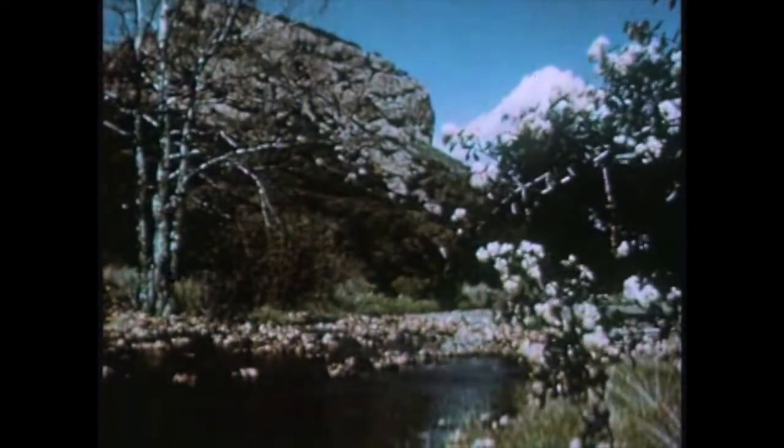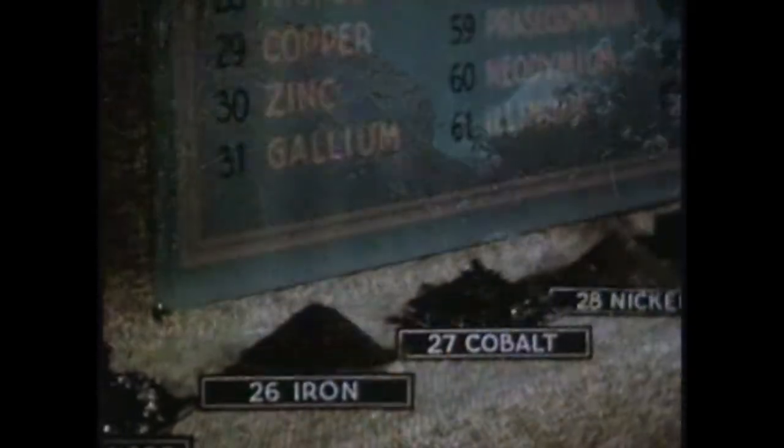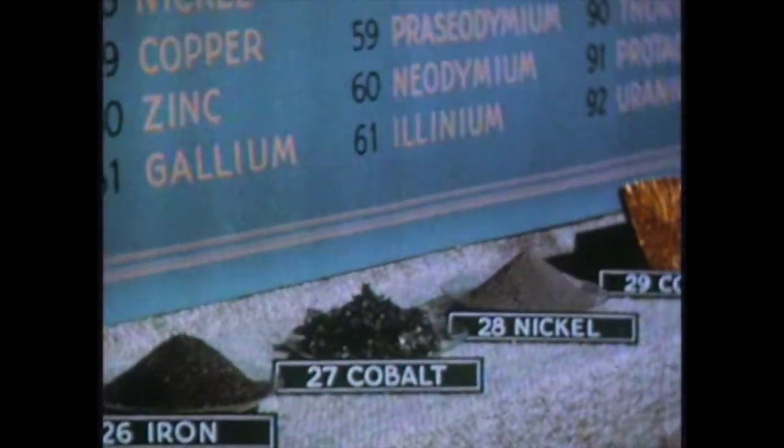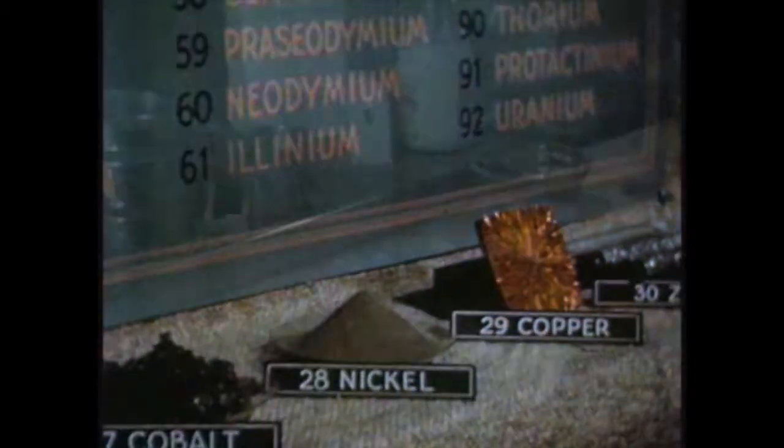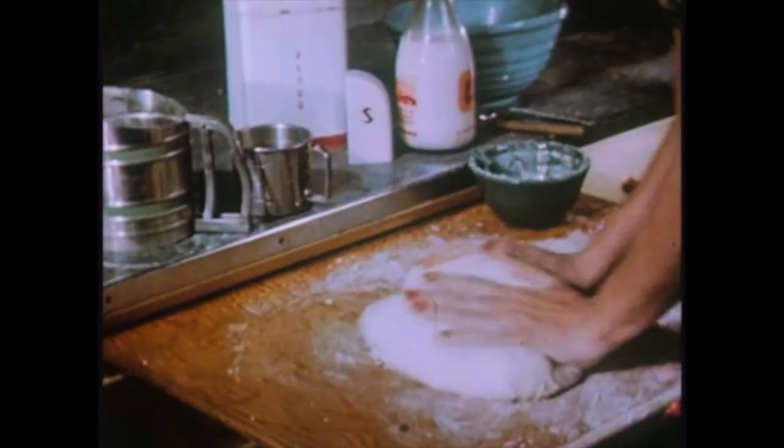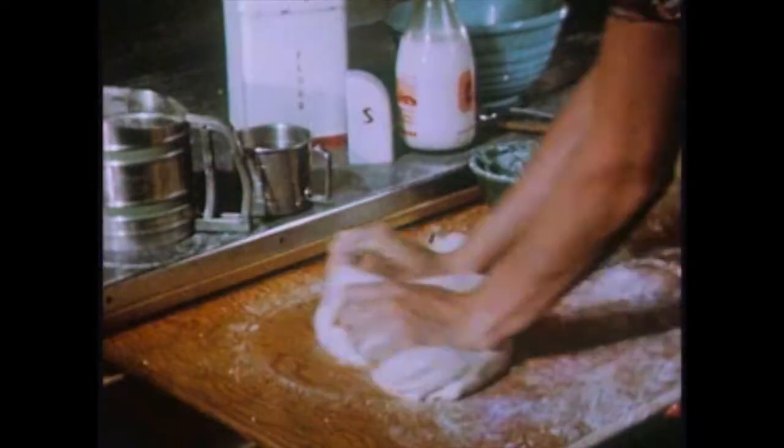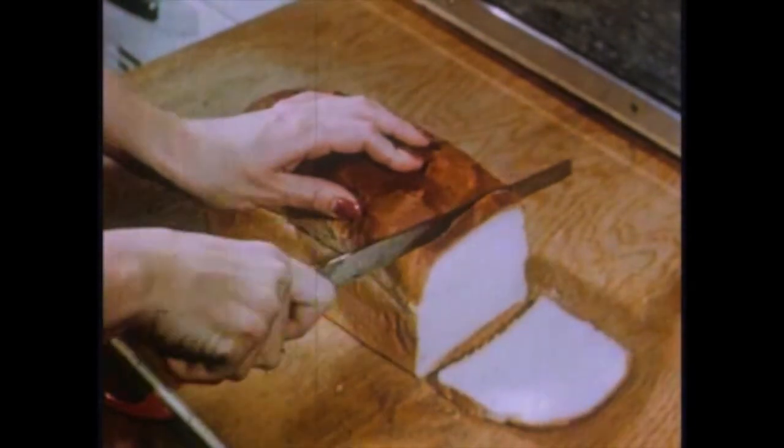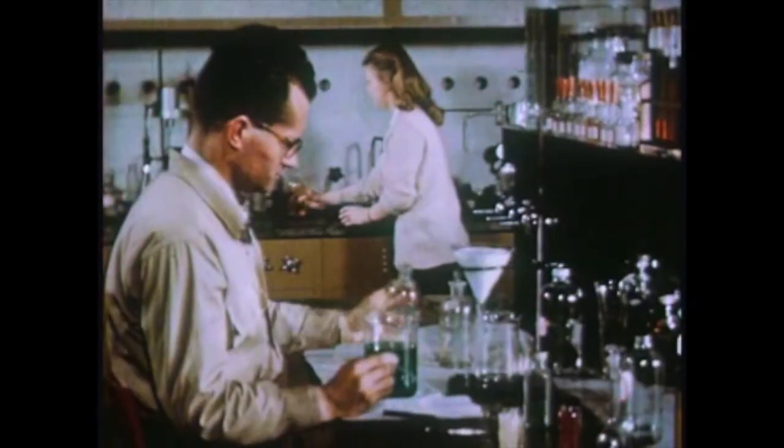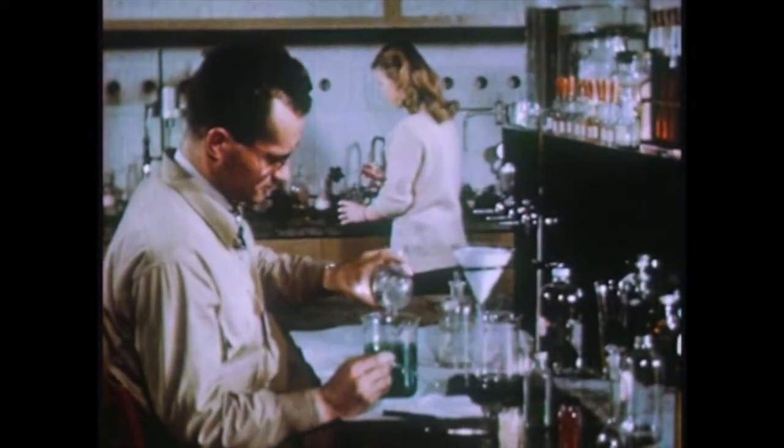There are many different substances, each a combination of some of the 92 known chemical elements. Just as yeast, flour, salt, sugar and shortening are the ingredients used in making bread, so are the 92 elements, the ingredients of all matter.